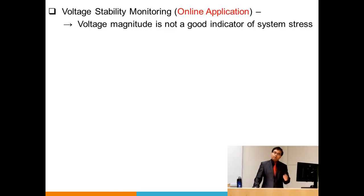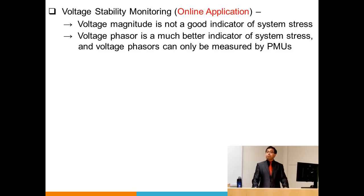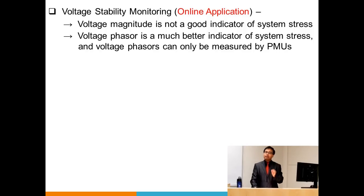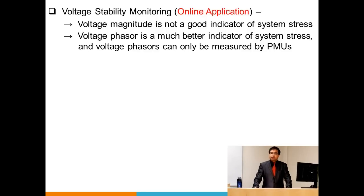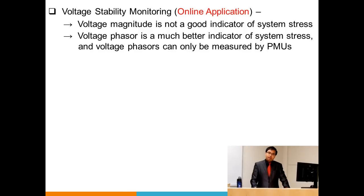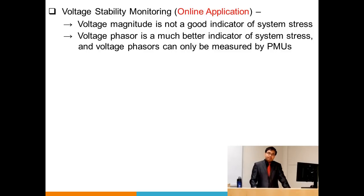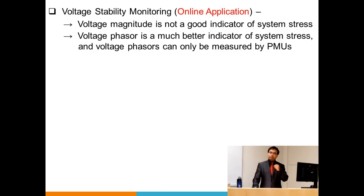Voltage phasor is actually a better indicator of system stress because it contains information not only about voltage magnitude but also about voltage angle, which is an excellent indicator of system stress. If we have PMUs, voltage phasor data can easily be monitored at the substation level. Many voltage control algorithms already work at the substation level, so if they rely on voltage phasor data rather than just voltage magnitude, the voltage stability monitoring and control mechanism can both improve.